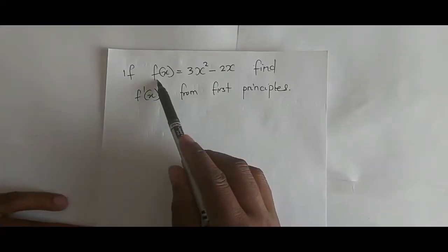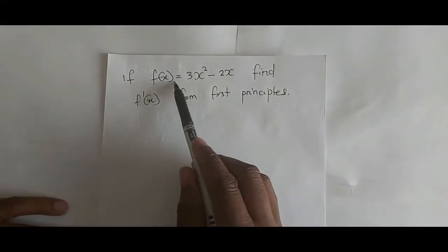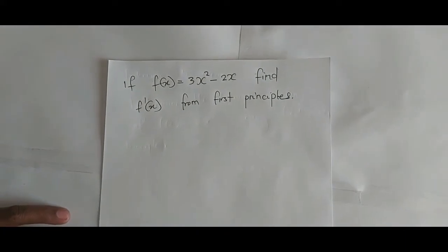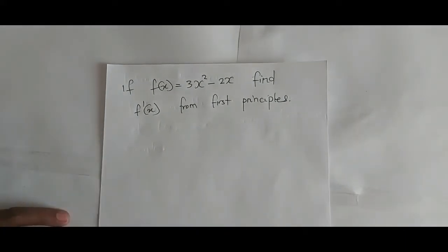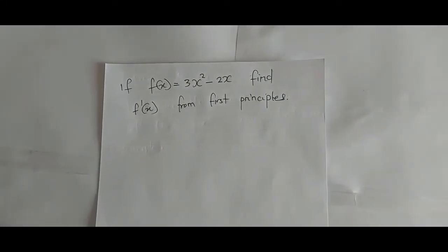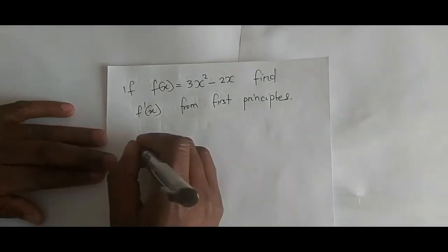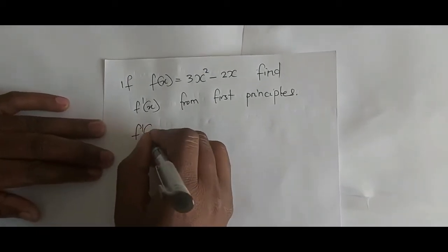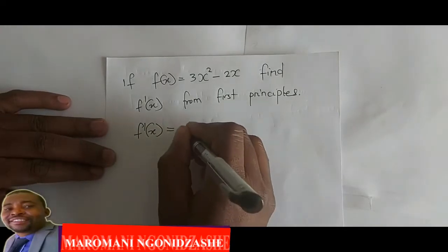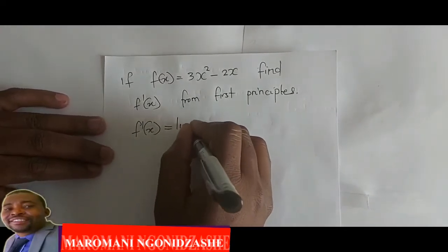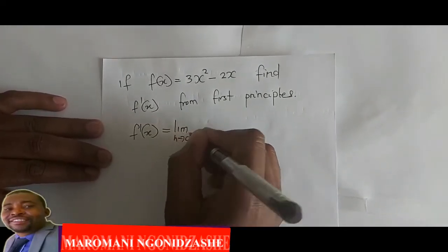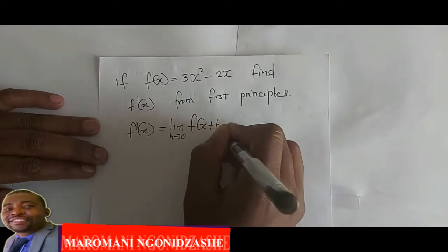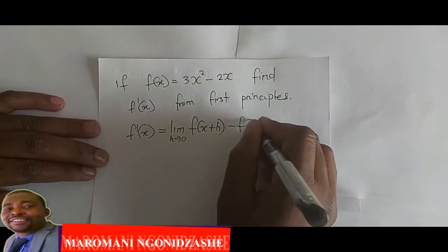We are given that f of x is equal to 3x squared minus 2x. We must find f dash of x, that is the derivative from first principles. By definition, the first principle means that f dash of x is equal to the limit as h approaches 0 of f of x plus h minus f of x all over h.